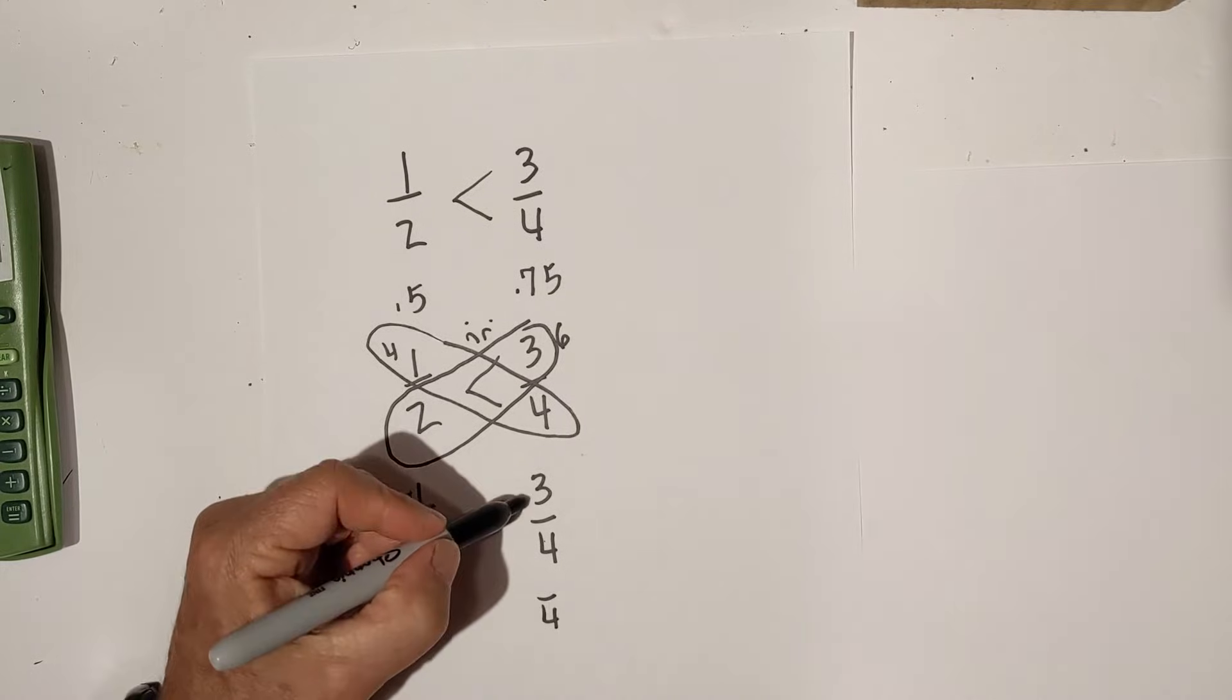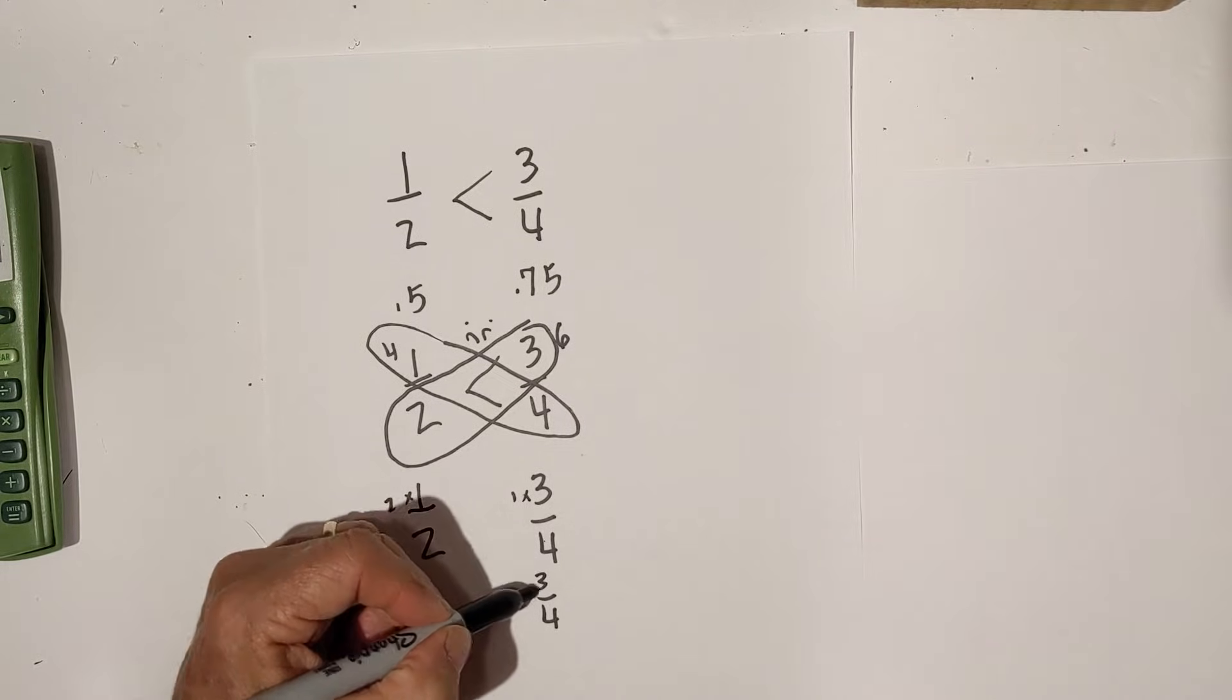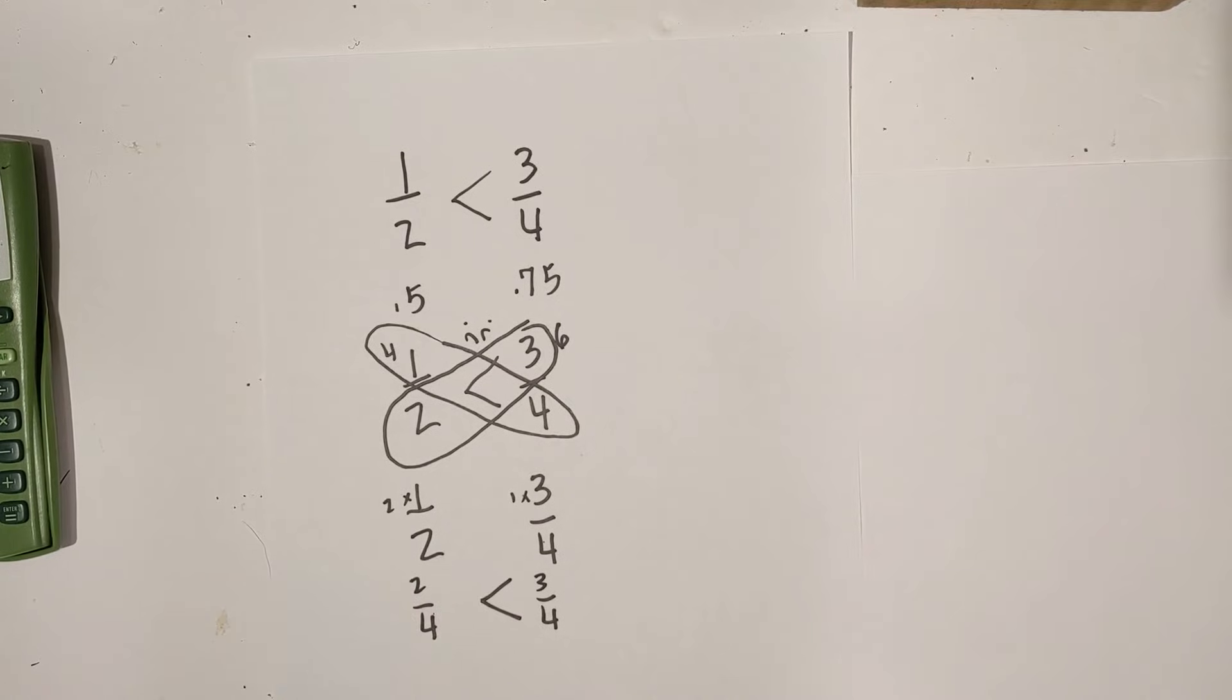4 goes into 4, 1 times 3 times 1 is 3, and once again, 3 fourths is larger than 1 half. Let's do a little bit more challenging fraction.